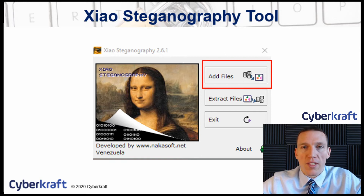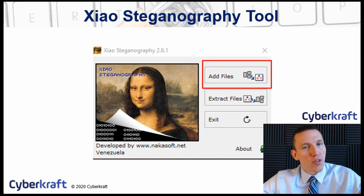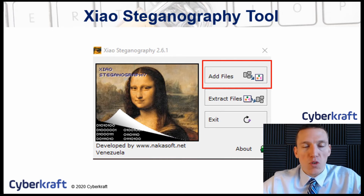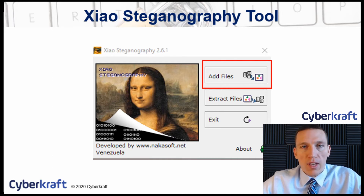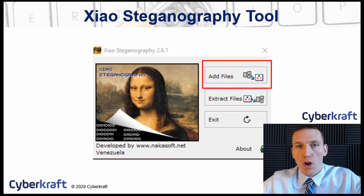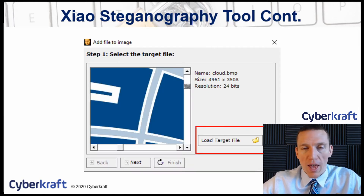We're going to go through an example with a common steganography tool. There are many out there — there's Steghi, some command line tools. This one's called Zao Steganography, and it's a very simple application. How it works is you open up this interface — this is all the interface you get. You add a file.